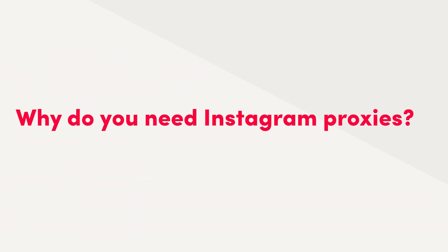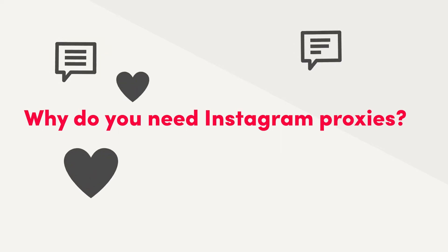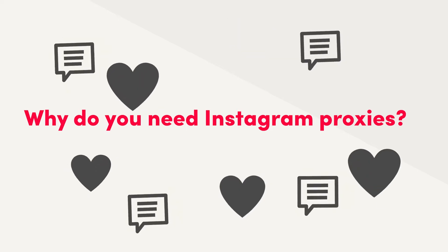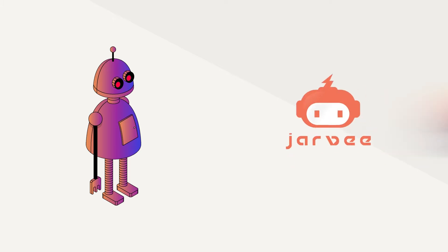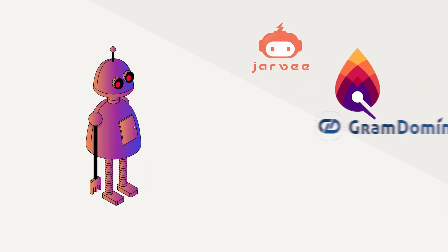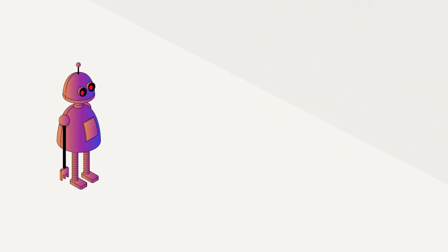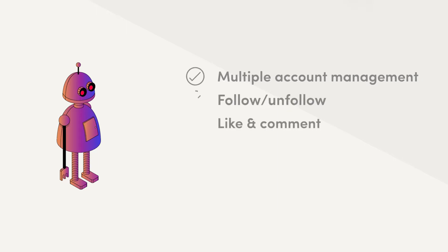If you want to grow on Instagram, it's usually a lot of work even with one account. All the liking, commenting, and posting takes a lot of time. But Instagram bots, such as Javi, Viralgniter, and others, let you quickly grow multiple Instagram accounts, follow or unfollow, and automatically engage with your followers.